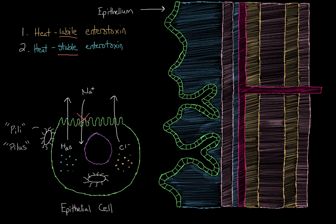Notice this is actually a pretty similar mechanism to the way that the cholera toxin works. In fact, the heat-labile enterotoxin acts on the same enzymatic pathway that the cholera toxin does.